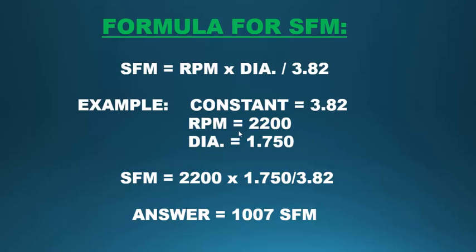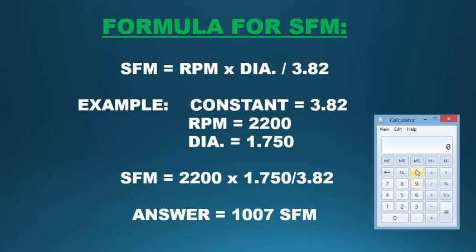Let's plug in those numbers. We got the RPM of 2200, multiply that times the diameter of 1.750, and then divide that by 3.82, which equals 1007 surface feet per minute. These are a couple of formulas that will come in handy for calculating your feed and speeds when writing a program.